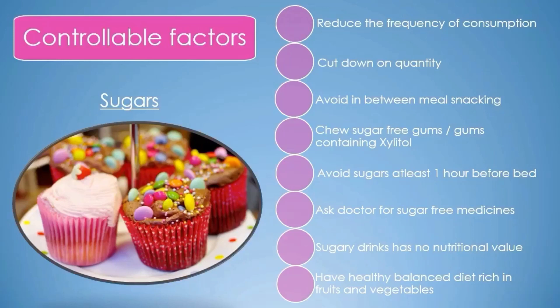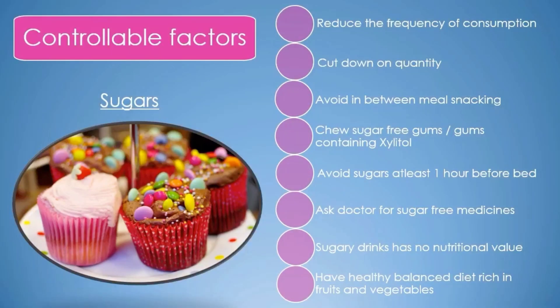Avoid unhealthy snacks between meals — instead, have sweets with meals to limit the number of times your teeth are under acid attack. Chewing sugar-free gum can help your mouth produce more saliva, which helps wipe out acids. Avoid sugars at least an hour before going to bed, because you produce less saliva while you sleep. Be mindful of medications that contain sugar and seek advice from a doctor for sugar-free alternatives. Sugary drinks like soda and energy drinks contain high levels of sugar but very little nutritional value.